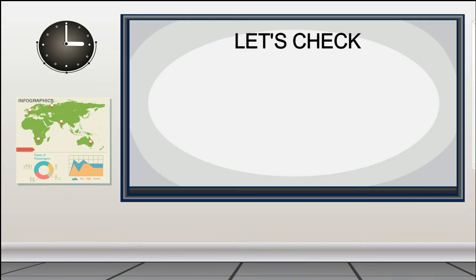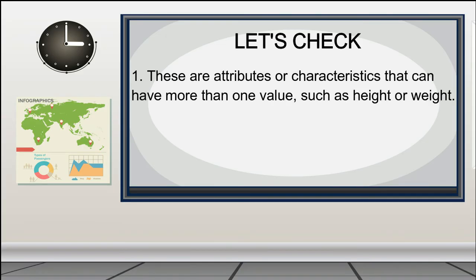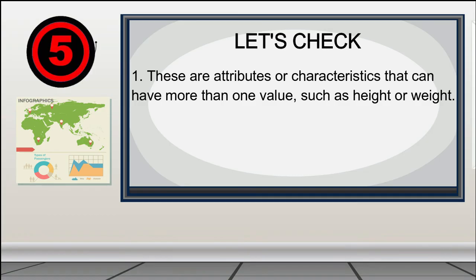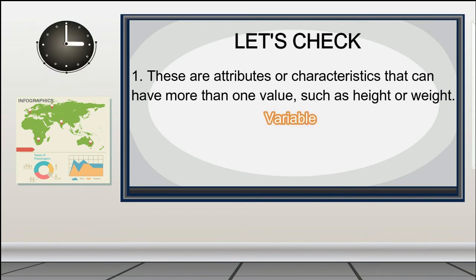Did you understand the lesson? Great! Now let's have a short exercise. Please answer the following questions and write your answer on a clean sheet of paper. Identify the terminology that is being described in each number. 1. These are attributes or characteristics that can have more than one value such as height or weight. The answer is: Variable.